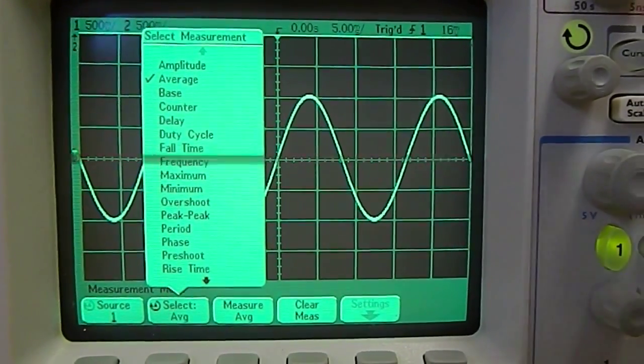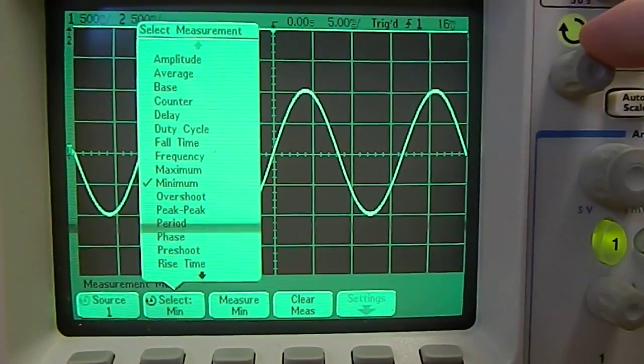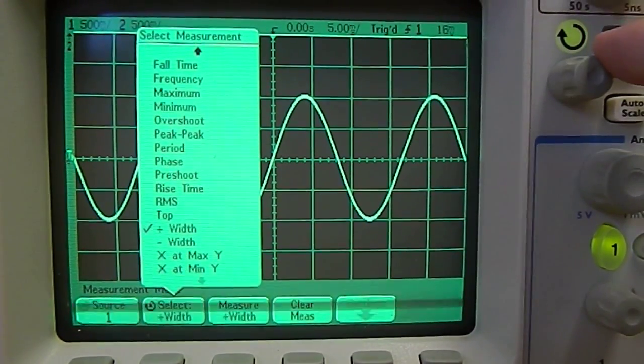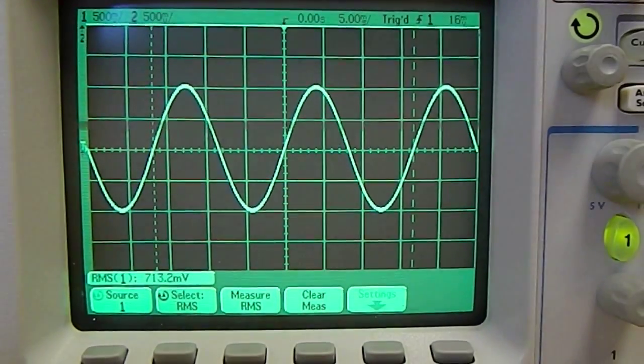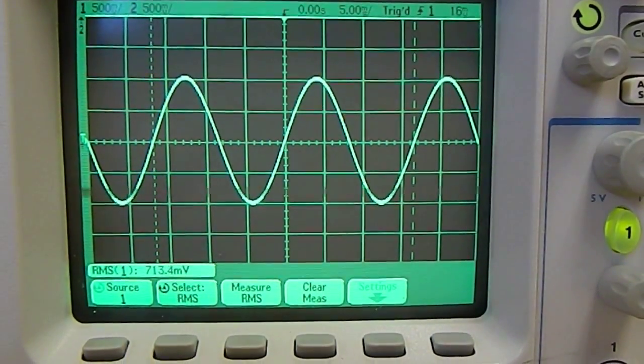This actually becomes fairly straightforward to choose whichever type of thing you want. For example, RMS voltage. Then you click measure RMS and it gives you the RMS value.